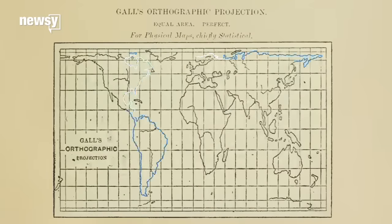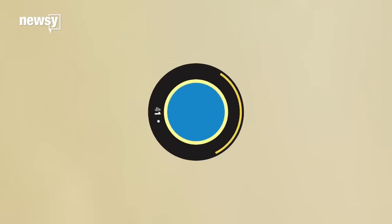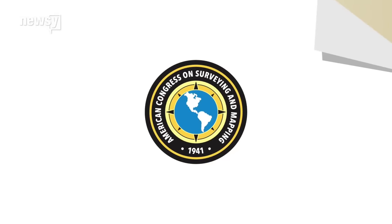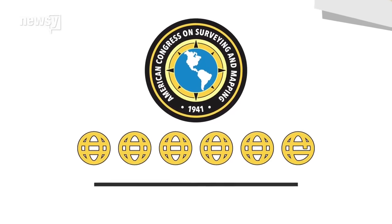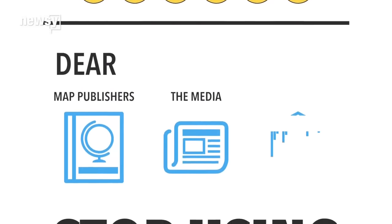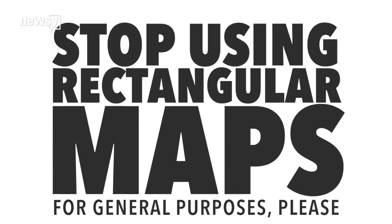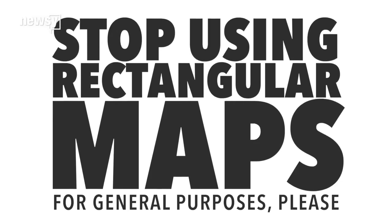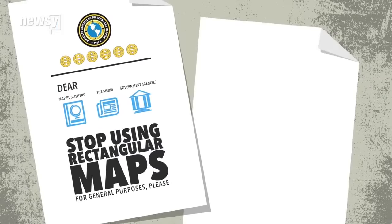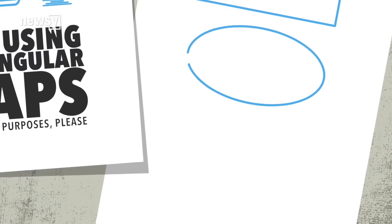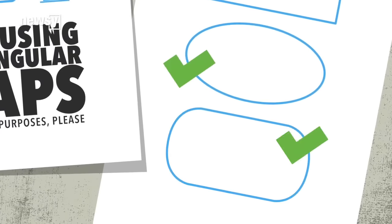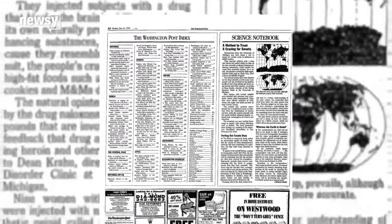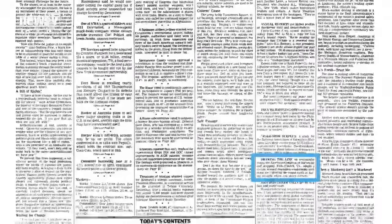A Scottish clergyman named James Gall had created virtually the same thing in 1885. Eventually, the American Congress on Surveying and Mapping stepped in with a resolution. The organization and six other cartographic groups urged map publishers, the media, and government agencies to stop using rectangular depictions like the Gall-Peters and Mercator for general purposes. The answer to the Greenland problem was not a new rectangular map, but instead non-rectangular projections like the Mollweide or the Eckert IV. The media picked up the resolution — there was a column in the Washington Post, and it even made the front page of the Wall Street Journal.